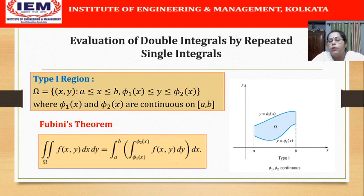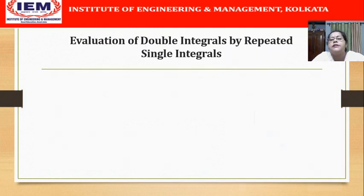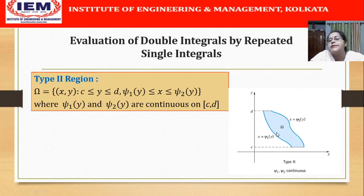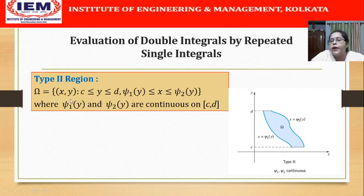Now we proceed to see how we do it for a Type 2 region. A Type 2 region is somewhat like this as shown in the figure, where y is varying from c to d. No longer is y a function of x as in Type 1; rather, x is varying from the left curve chi_1(y) to chi_2(y). The region omega consists of points (x, y) where y varies from c to d and x varies from chi_1(y) to chi_2(y), where chi_1 and chi_2 are continuous functions on [c, d].